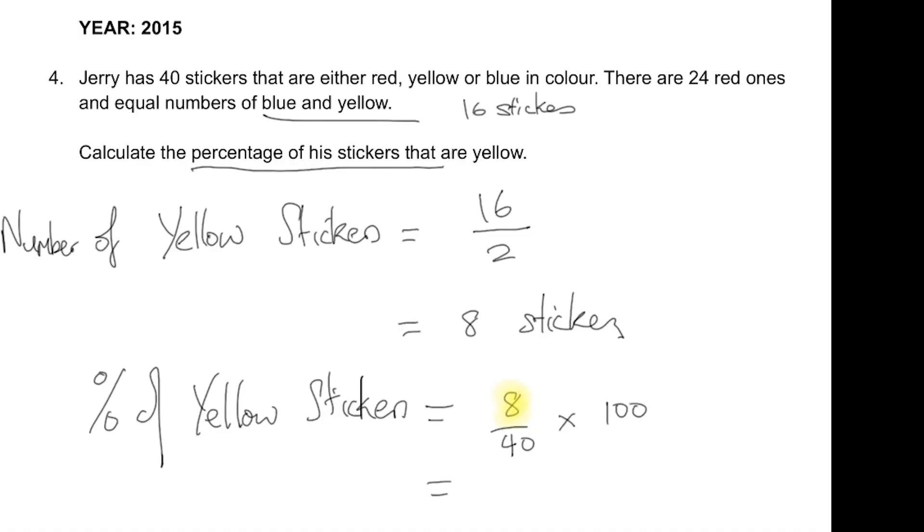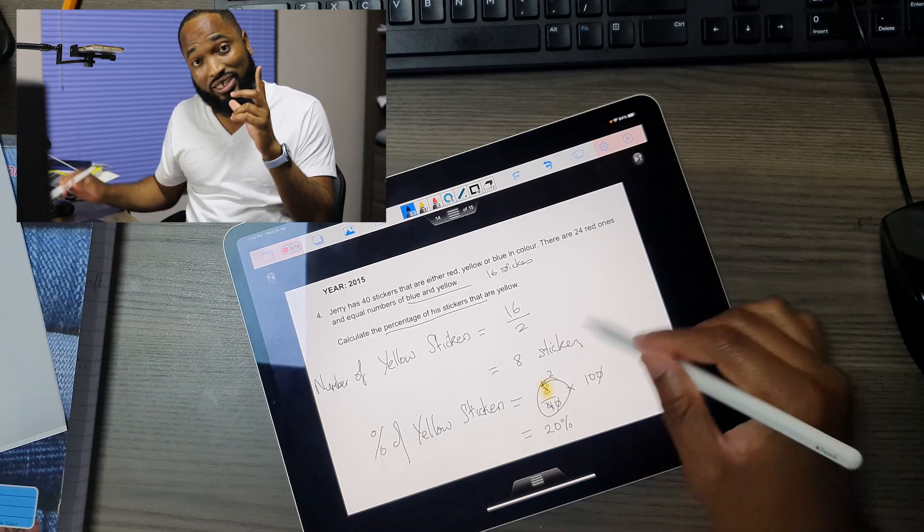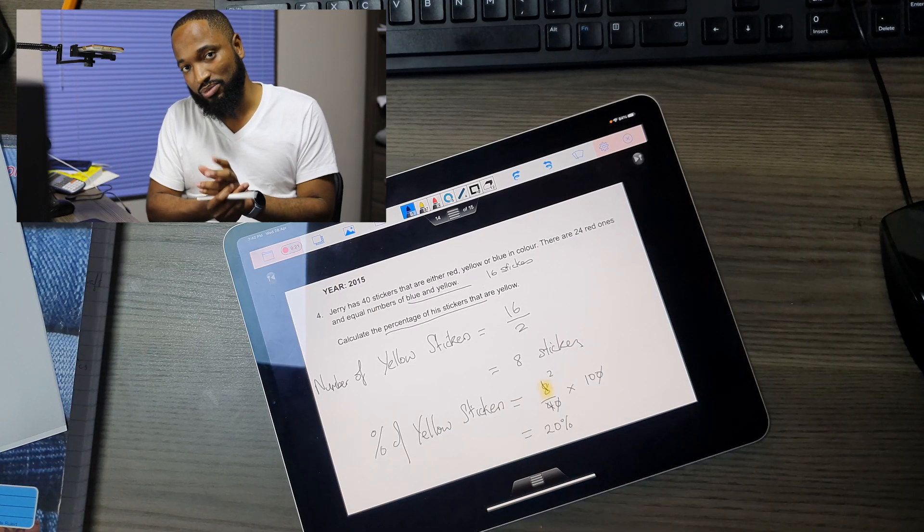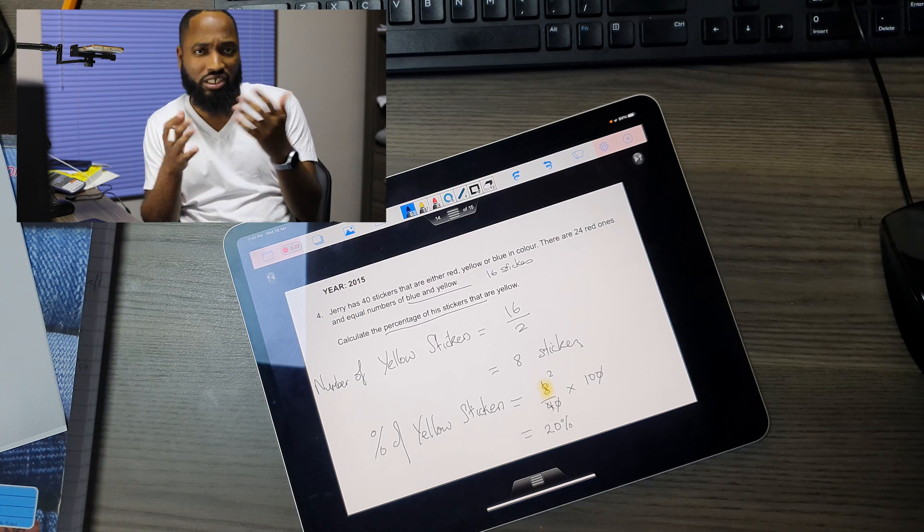Multiply by 100%. One-fifth expressed as a percentage is 20%. What do you think about this one? This was an easy one. Did you get the answer? I'm going to do one final video.